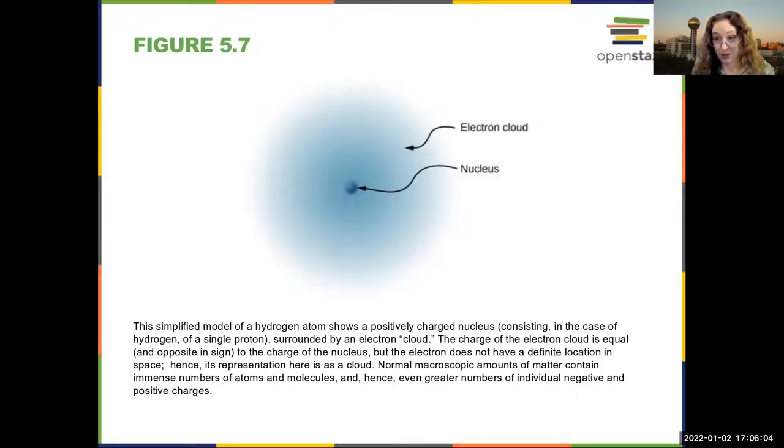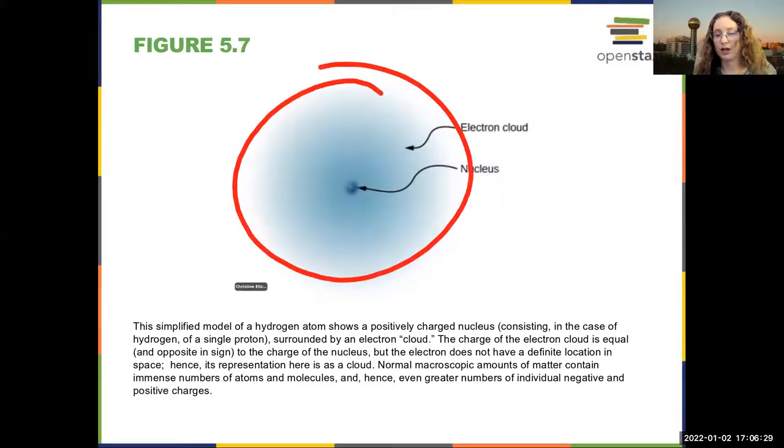So what we now know is that these charge carriers are mostly electrons in most cases. And what's really going on is that you are taking electrons out of atoms. So this is a very simplified model of the atom where you have a nucleus in the center and you have a cloud in the surrounding area distributed around the nucleus.